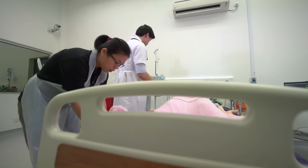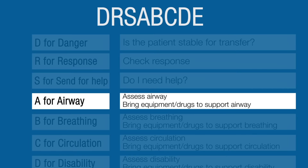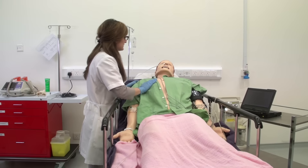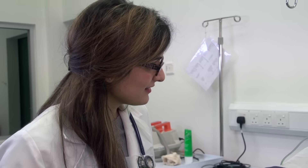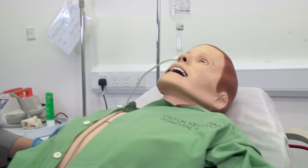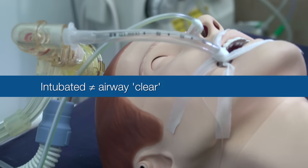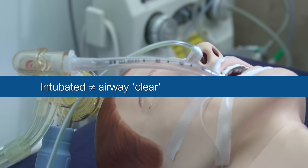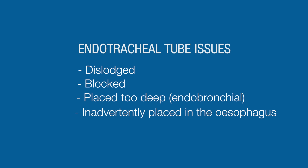We will now go through the steps for patient preparation. If the patient is not intubated, assess if the patient is able to speak. Listen for signs of upper airway obstruction such as stridor. Critically ill patients are often intubated. This does not mean the airway is clear. An endotracheal tube can be dislodged, blocked, placed too deep, or inadvertently placed in the esophagus.